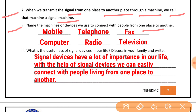Now the question is: name the machines or devices we use to connect with people from one place to another. Un machines ya devices ka naam likhiye jinka prayog ek isthan se doosre isthan par logon ko connect karne ke liye kiya jata hai. These are: mobile, telephone, fax, computer, radio, and television — sabhi ka use logon ko ek doosre se connect karane ke liye kiya jata hai.